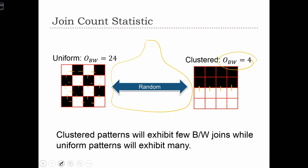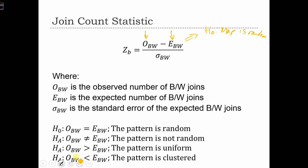OBW less than EBW. If you recall, when the map pattern is clustered we have a small OBW. So if we have an alternative that the pattern is clustered, the test we need to do is OBW less than EBW.